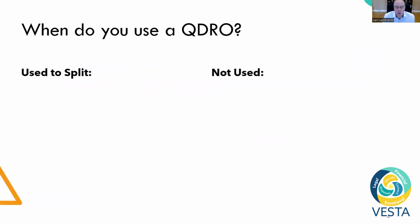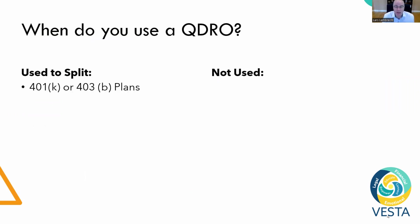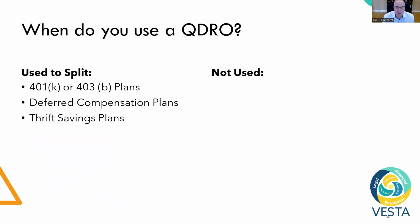So when do you use a QDRO and when do you not use a QDRO? QDROs can be used to split 401(k) plans or 403(b) plans, deferred compensation plans, or thrift savings plans. In other words, most employer retirement plans can be split through a QDRO.